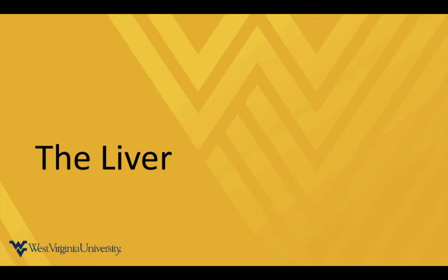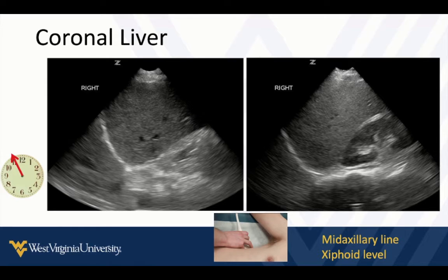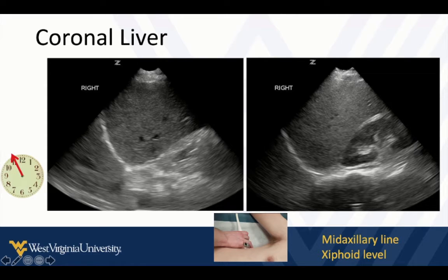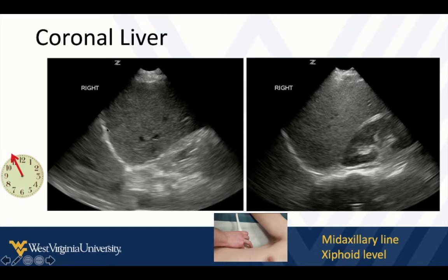On the right side, up around the liver — just recognizing what the liver looks like. If we take a view, this is how we would first initially examine the patient if we're looking for intra-abdominal fluid: starting up in the right upper quadrant in about the mid-axillary line, indicator at about 11 o'clock, and we can fan from ceiling to floor to look for the coronal views of the liver.